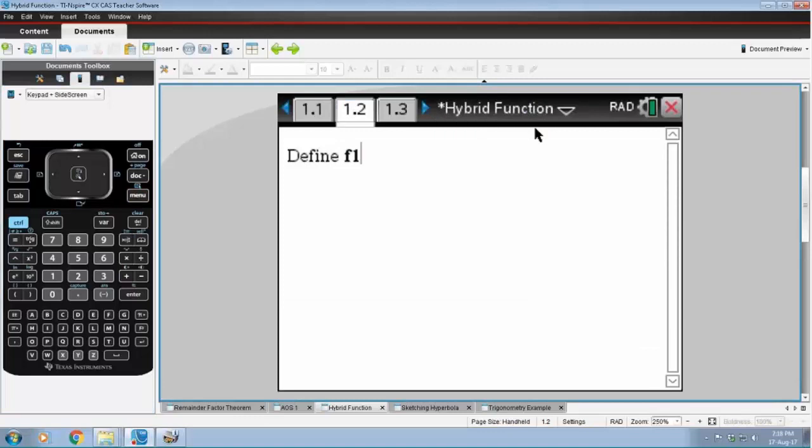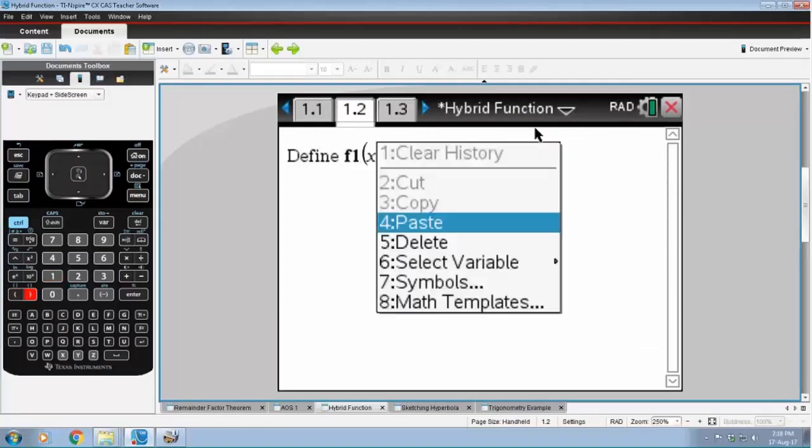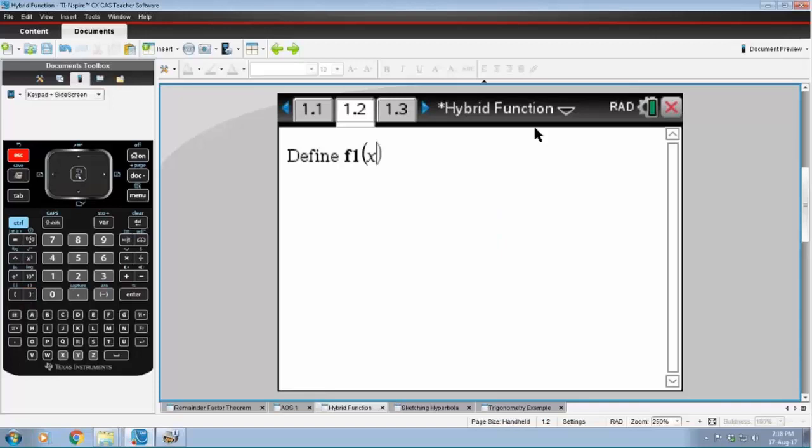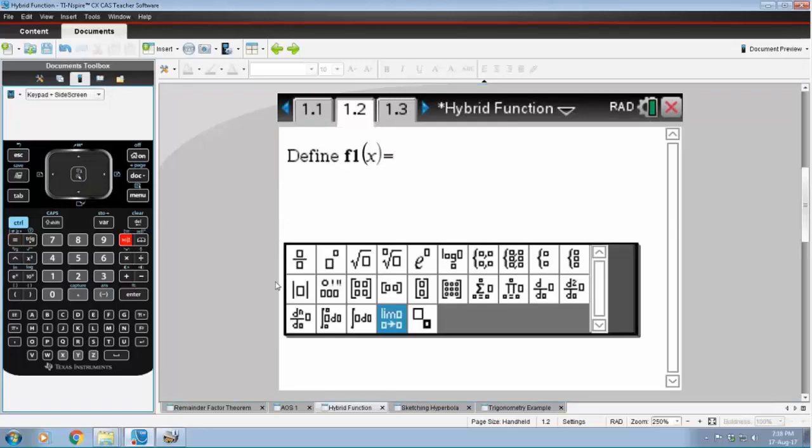So I'm going to define f1 of x and I want to get a branch here. Now again from this template we can see that we've got our branch of three bits there.